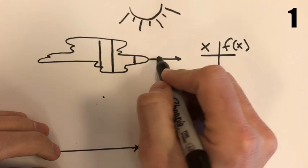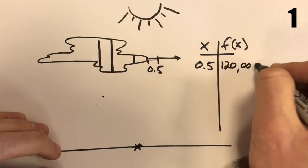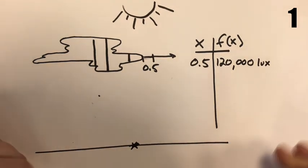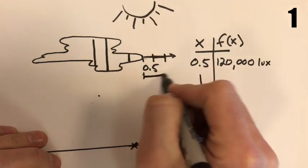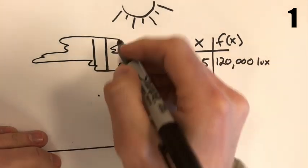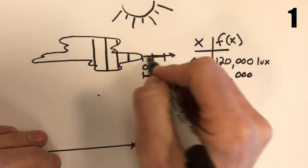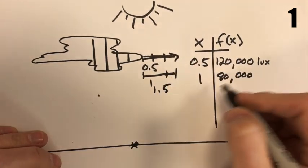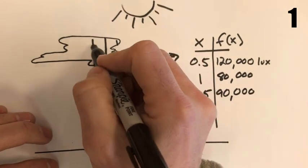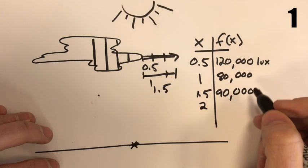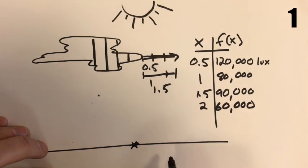As the cloud moves forward half a mile, we've got a luminous intensity of 120,000 lux — this is slightly different than candelas but for our purposes it's about the same. Then as it moves another half mile, so now we're one mile into the travel, it's a little darker: we're at 80,000 lux. After another half mile — 1.5 miles total — we're at 90,000, maybe a thinner part of the cloud. After two miles of travel we're at 60,000, a thicker part of the cloud.